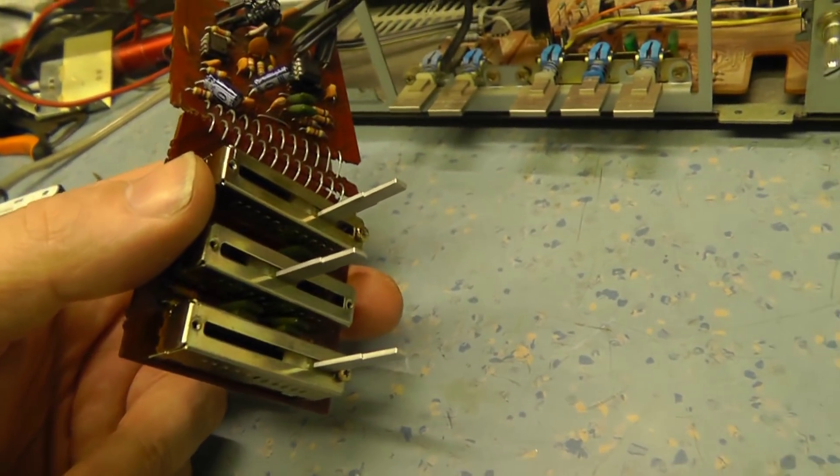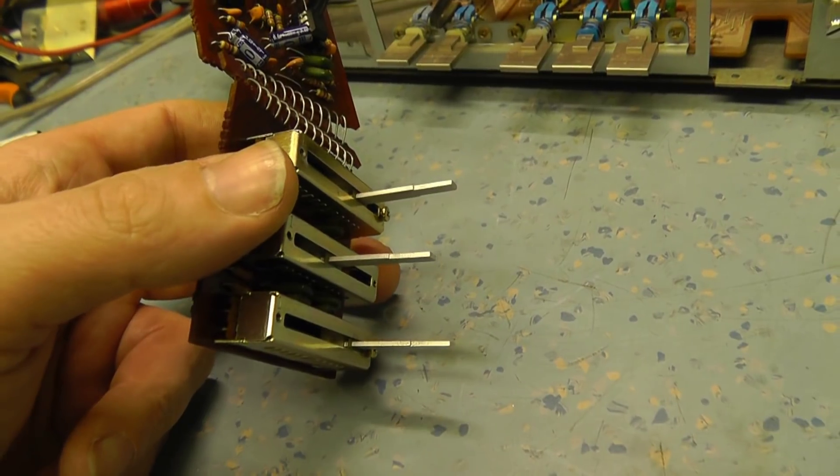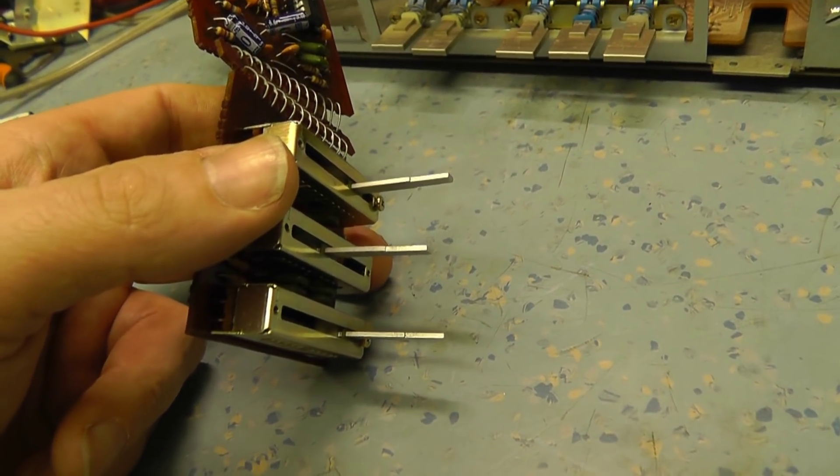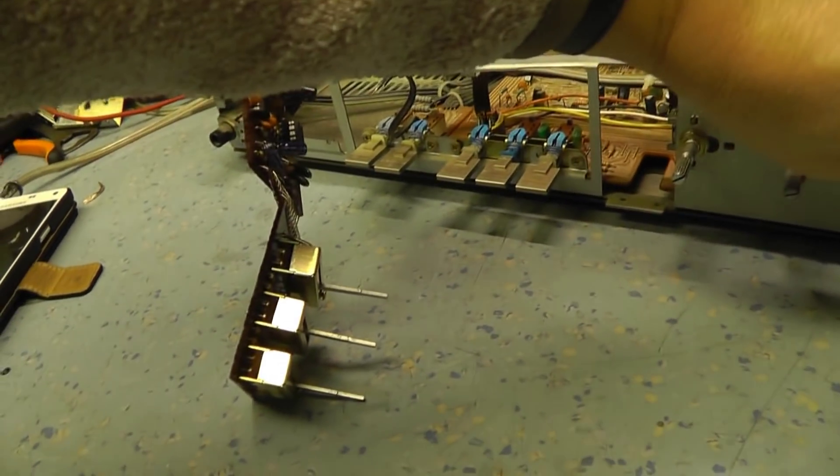So I've stripped them all down, cleaned the contacts up, re-glued the fingers to the slider itself, bent the contacts up. And now I've got working bass and treble on both channels.